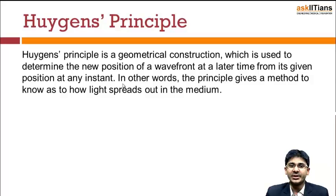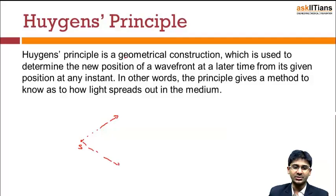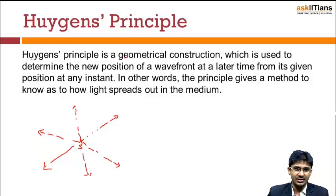This principle gives you a method to know how the light spreads out in the medium. The light is following a particular path, so you will know how this light is moving and how it is spreading in a particular medium. Like if you see a point source, what will happen to the light? Light is moving in all directions — it emanates like this. This is the physical interpretation that we all know.